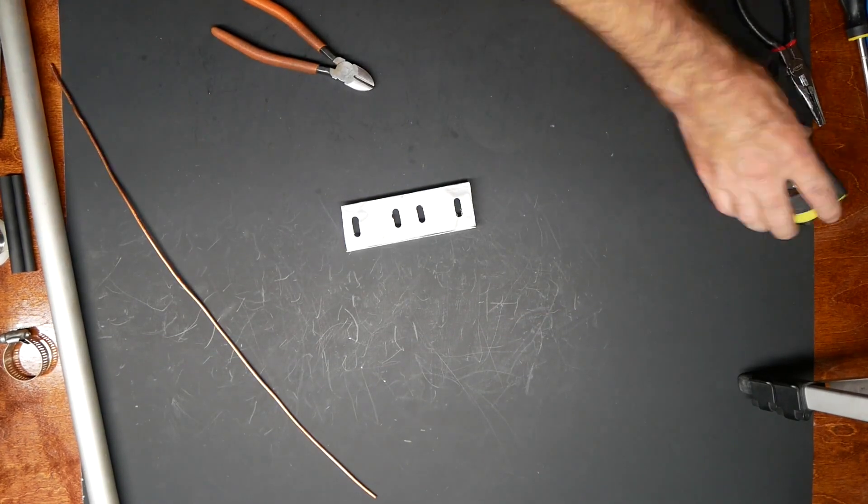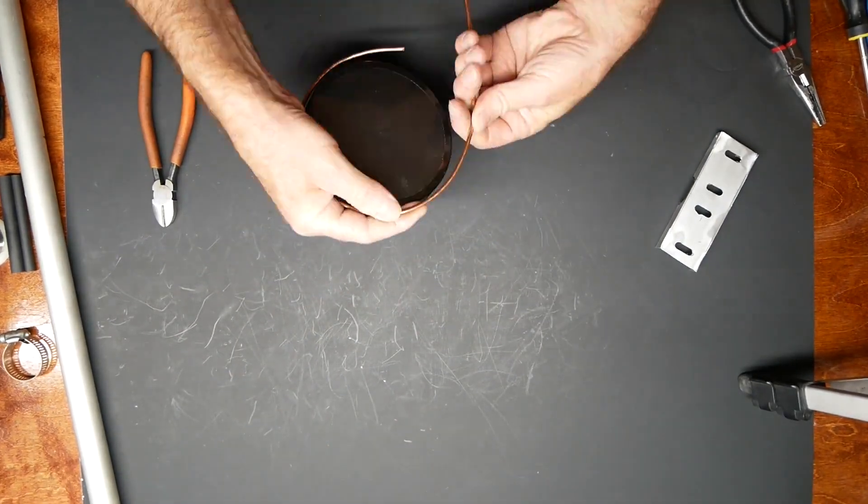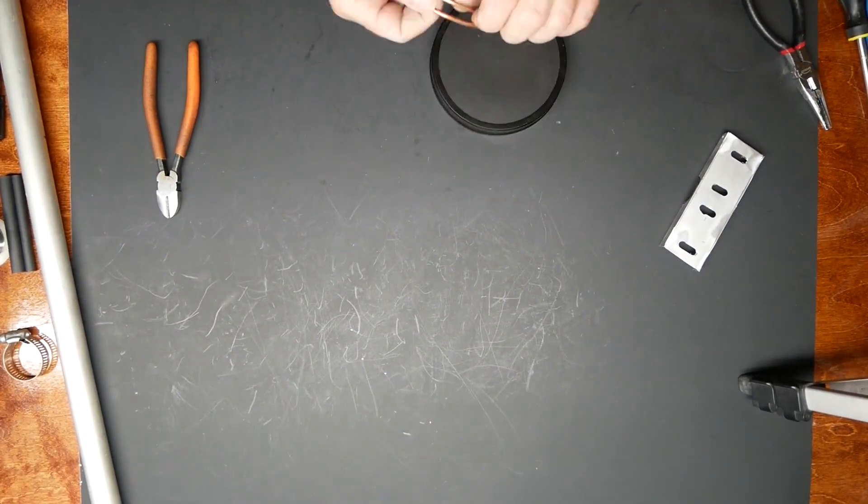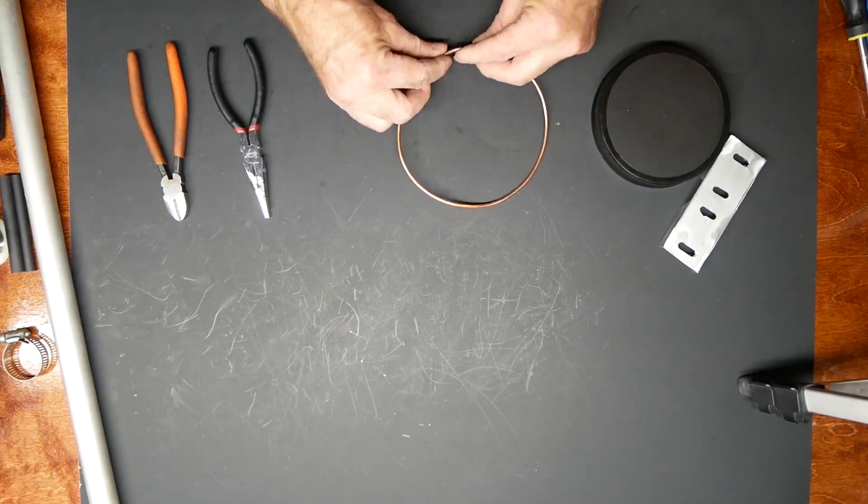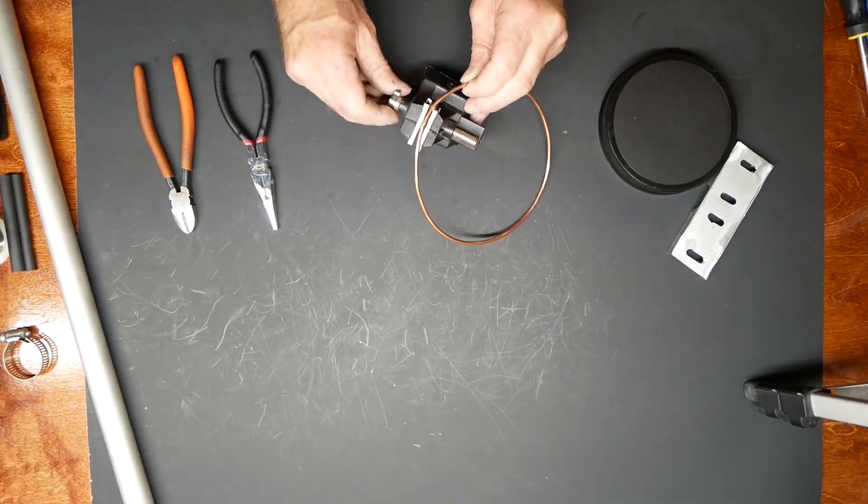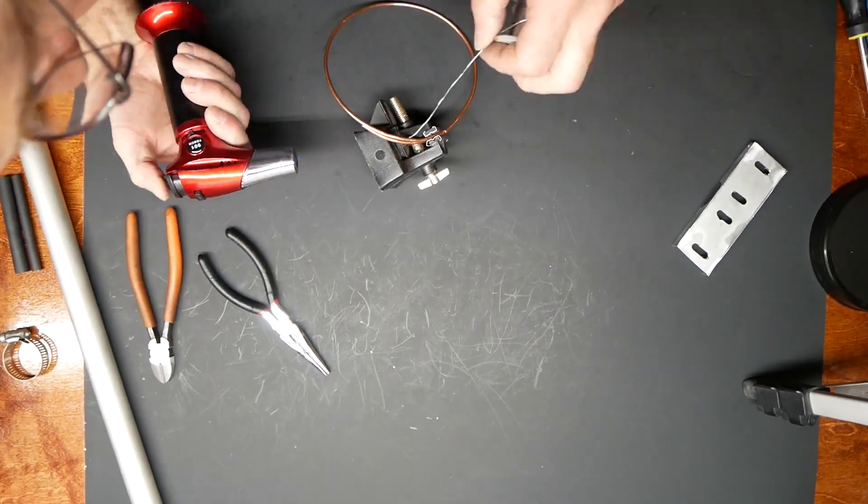I basically just used heavy gauge copper wire, 6 gauge from the hardware store, about $10 worth. Pretty low cost to get into an antenna. It should work pretty good. We'll know once we get it up in the air. It's pretty simple construction. I just used copper and solder to put it together.